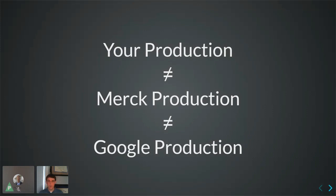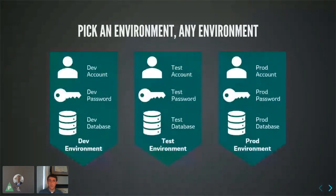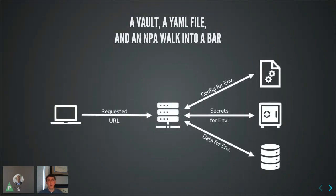To give an example of one challenge we faced: we had three environments, three service accounts, three databases, and three passwords. Our global enterprise security requirements say we can't store passwords unencrypted in plain text at rest. When a Shiny app makes a request, the user hits a URL with a subdomain — for us, something like cpv-dev.merck.com — and based on that subdomain we can determine what environment we're operating in.